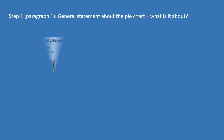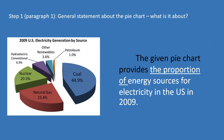After this, you may begin with step one, which is to write a general statement of what the chart is about. Information for this step can be found on the title, the legends, and the source and notes if they are provided. For this sample pie chart, we may write our general statement this way: "The given pie chart provides the proportion of energy sources for electricity in the U.S. in 2009."